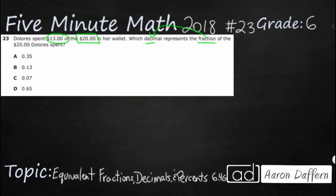So she spent $13, so let's put that in our numerator. We will say $13 spent, and our denominator is always going to be the total, so let's put $20 total — that's how much money she had. So that's our fraction: $13 over $20.